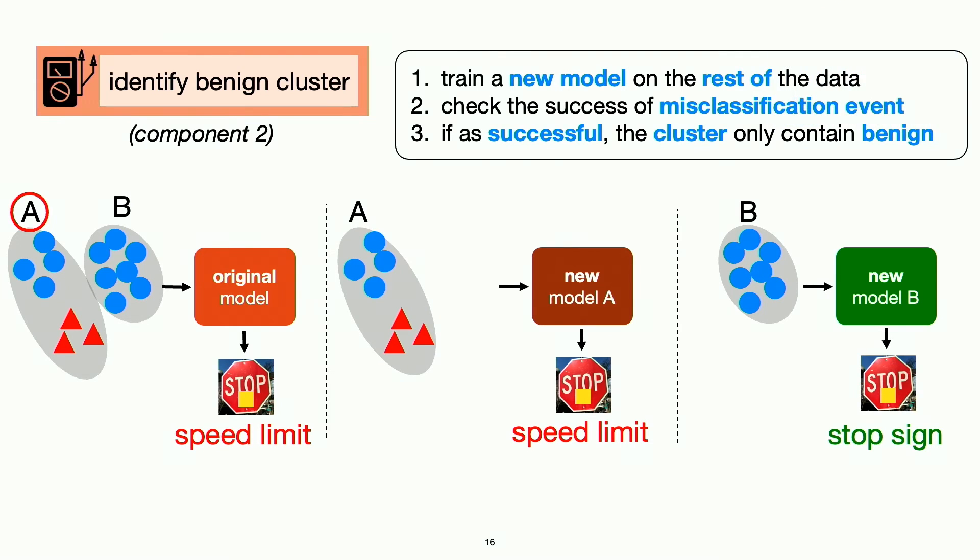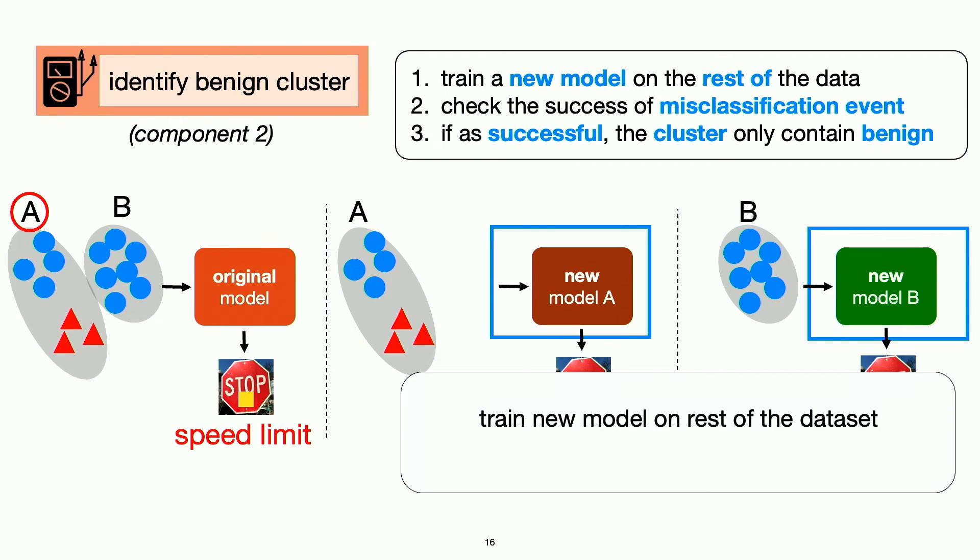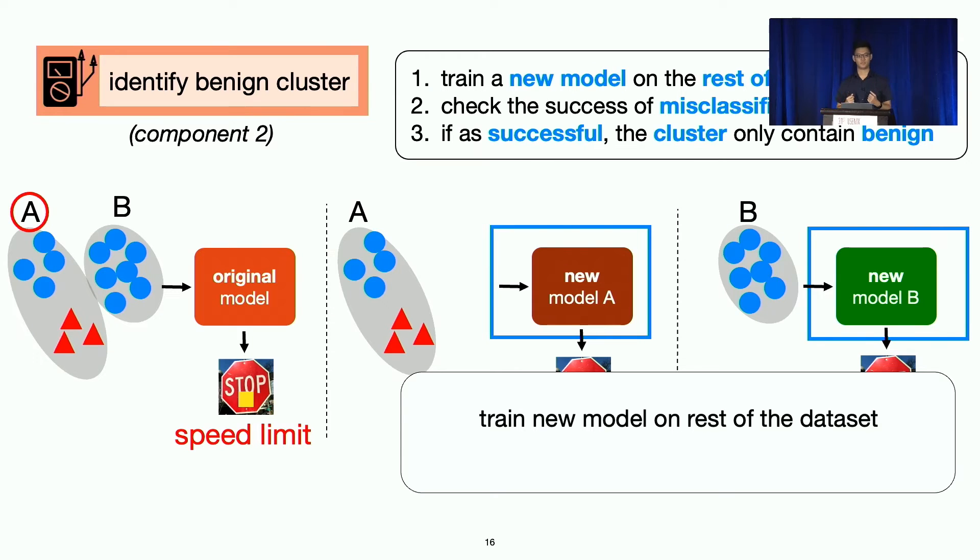So this indeed gave us a way to find the benign clusters. But as you may have already noticed, this is very expensive to do mostly because we have to train tons of models from scratch. And it will take around a month to do this for ImageNet dataset. So we try to speed this up using a trick called unlearning.